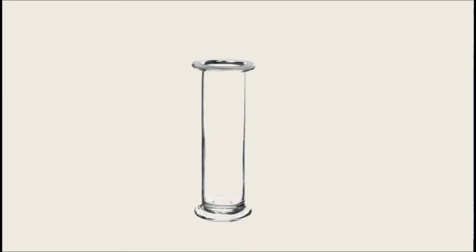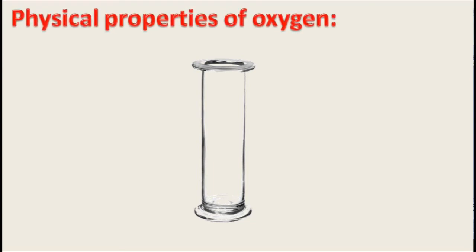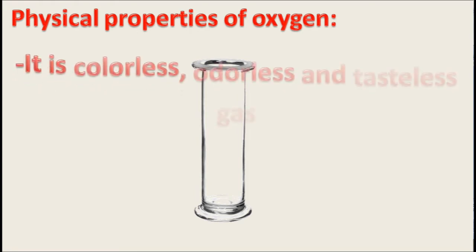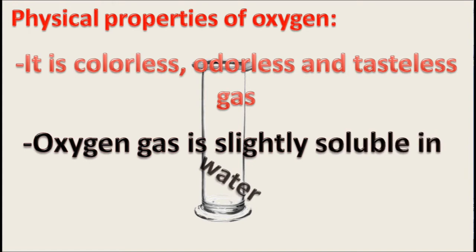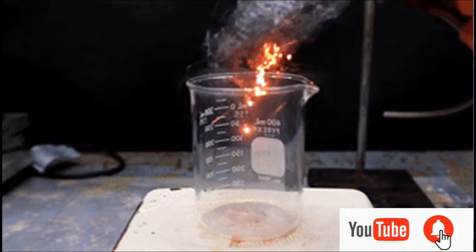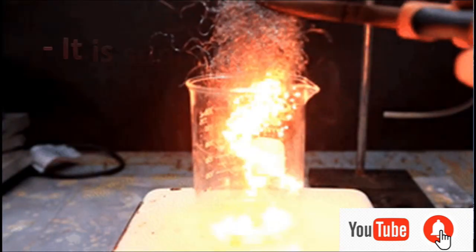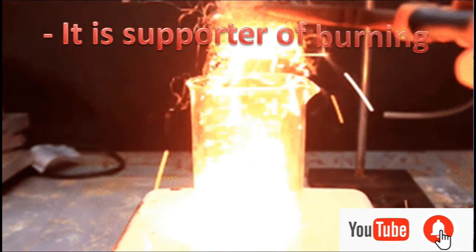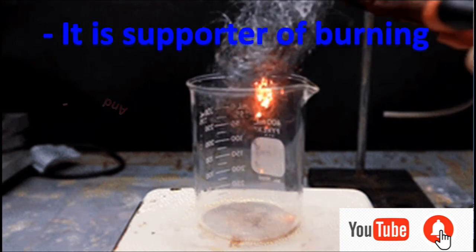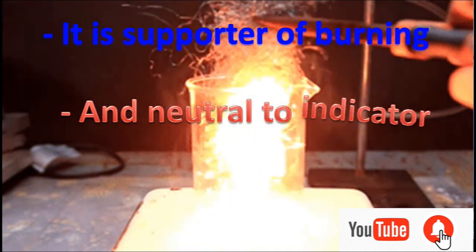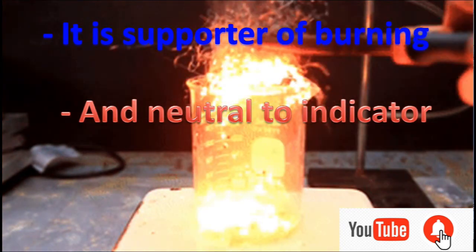Physical properties of oxygen: oxygen is a colorless, odorless, and tasteless gas. It is slightly soluble in water. The dissolved oxygen found in water resources like ponds and rivers is absorbed by aquatic animals during respiration. It is a supporter of burning — oxygen is needed for burning fire. It is neutral to indicators, that is, neither acidic nor basic.